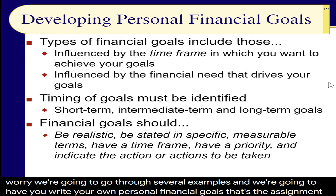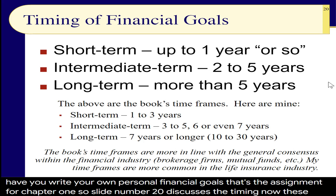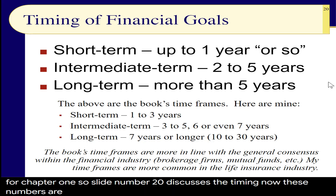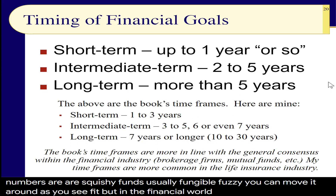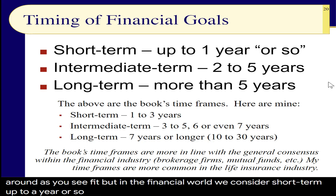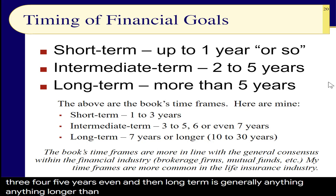That's the assignment for chapter one. Slide 20 discusses the timing. These numbers are flexible — you can move them around as you see fit. In the financial world, we consider short-term up to a year or so, intermediate-term as two to five years, and long-term as generally anything longer than five years. This is the industry's general time frame consensus.